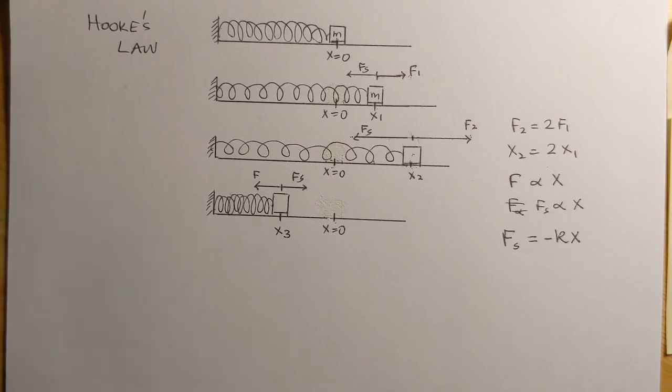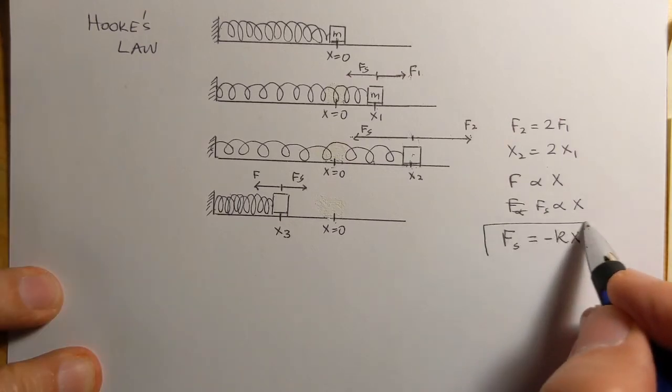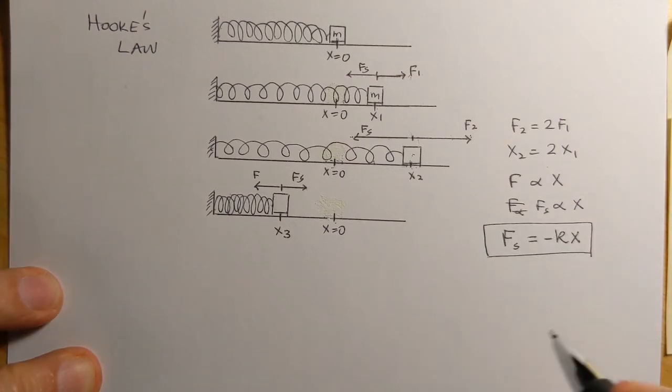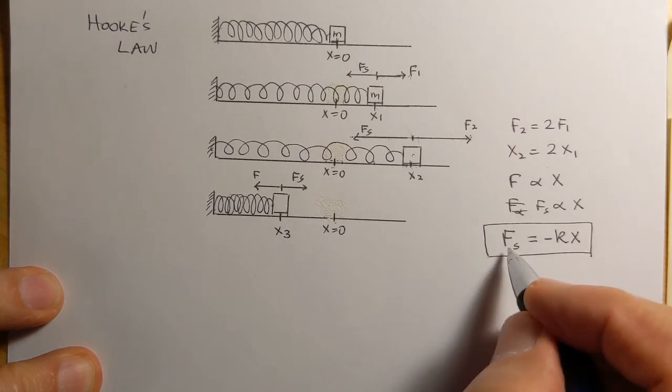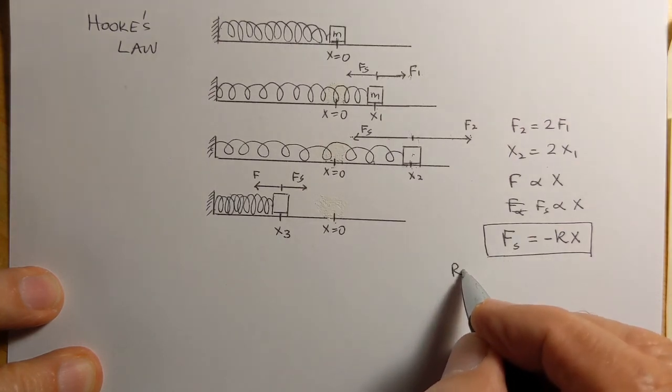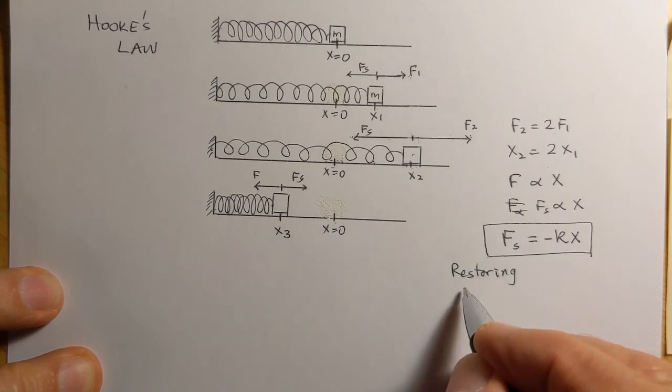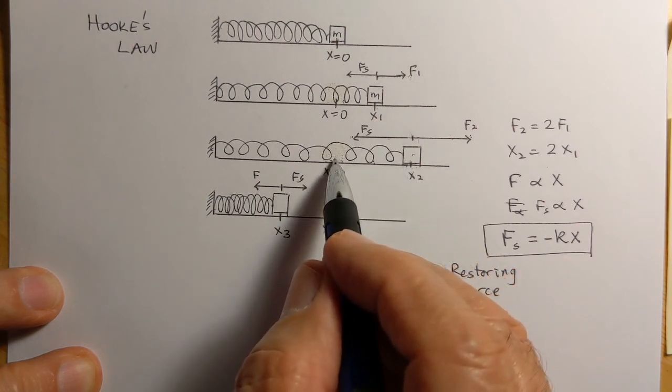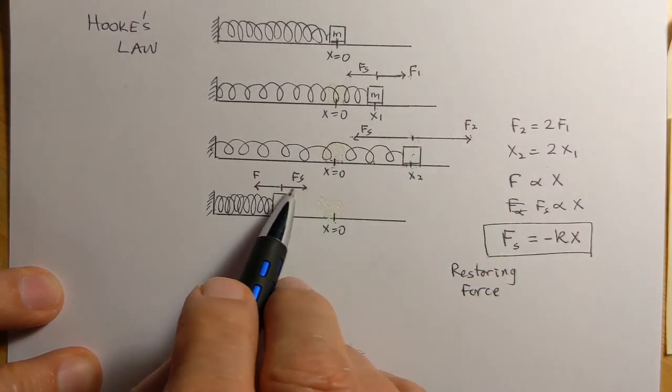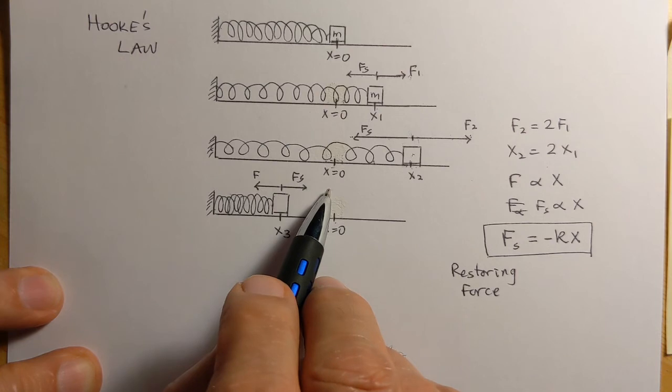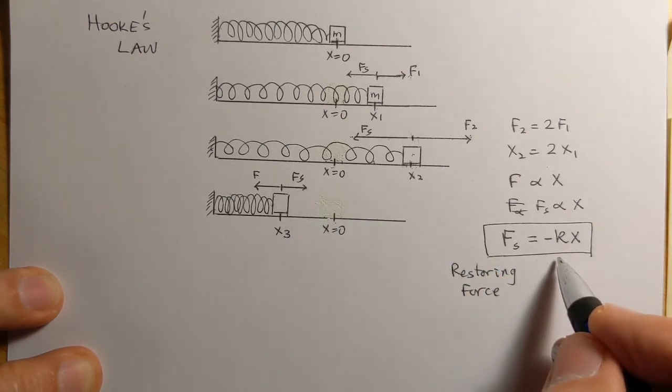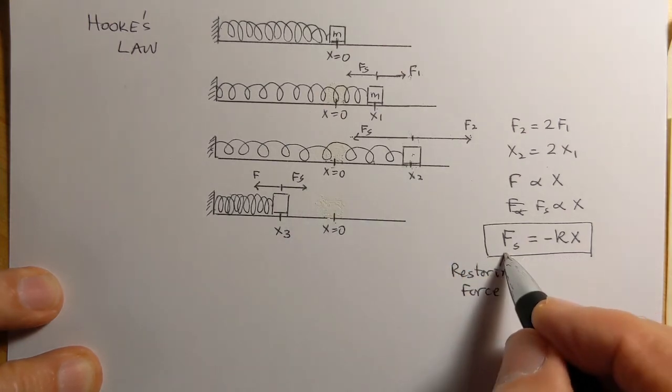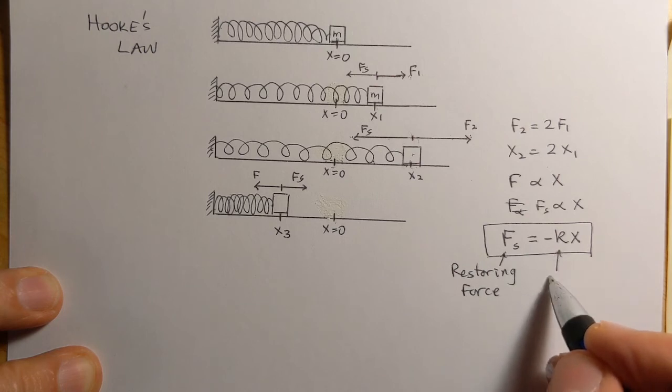This equation is called Hooke's Law, and this is the force applied by the spring, also called the restoring force, which tries to restore the spring back to its original position. This is the spring constant.